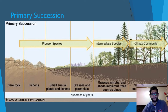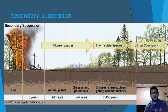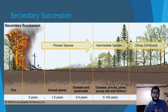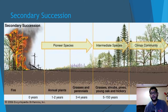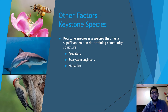In secondary succession, the difference is that there was a previous ecosystem — maybe a climax community that burned down, was hit by a hurricane or tornado, or maybe a man-made area like a parking lot where the concrete was removed and soil was left. The pioneer species here tend to be small grasses, weeds, and plants rather than lichens. Then perennials show up, then shrubs, and eventually the climax community starts to look a lot like the previous one. The key difference is time: secondary succession takes 200 or more years, whereas primary succession may take hundreds of thousands of years.